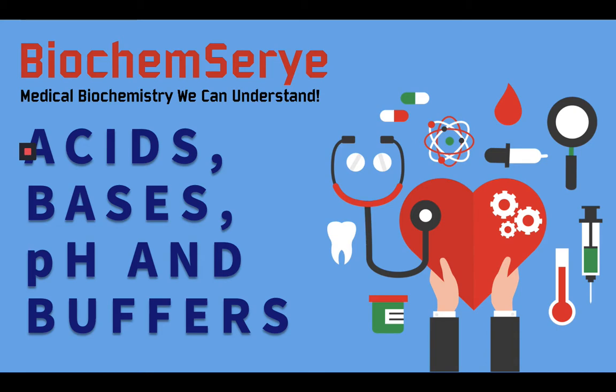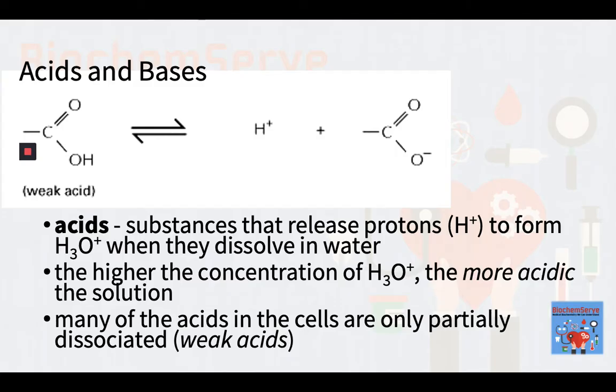Substances that release protons to form hydronium ions or H3O+ ions when they dissolve in water are termed acids. The higher the concentration of hydronium ions, the more acidic the solution. H3O+ ions are present even in pure water at a concentration of 10 to the negative 7 molar, as a result of the movement of protons from one water molecule to another. By tradition, the H3O+ concentration is usually referred to as the H+ or hydrogen ion concentration, even though most protons in an aqueous solution are present as H3O+ ions.